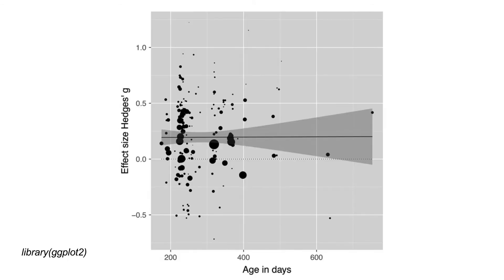In addition to meta-analytic plots, you may also want to see how effect sizes change as a function of some variable in your data. One common predictor examined in the infant literature is age. The plot here from word segmentation shows the correlation of age in days and effect size. The regression is rather flat, suggesting that effect size does not change as a function of age.